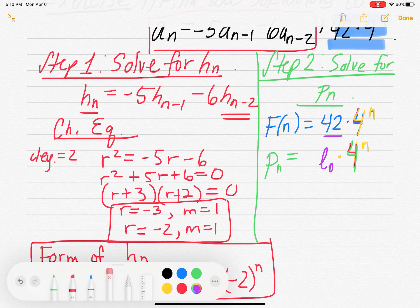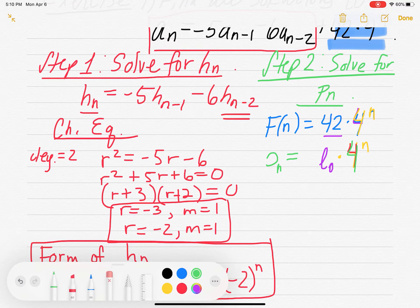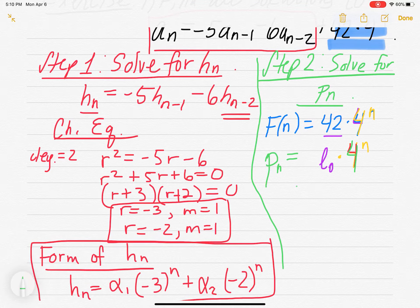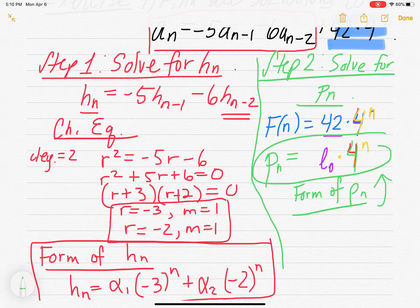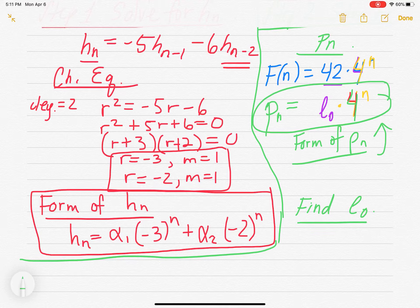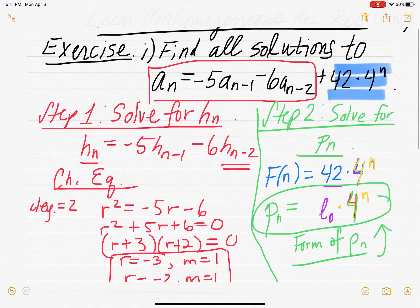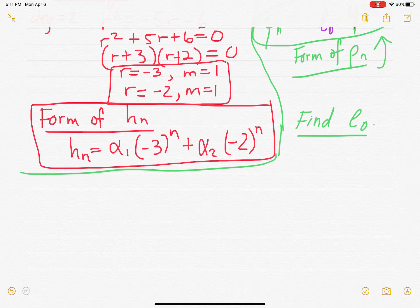So PN takes on the form E₀ times 4 to the N. That is the form of the particular solution. Now we want to find E₀ — this is the most difficult part. Well, if you go back to the recurrence relation, AN = −5·A(N−1) − 6·A(N−2) + 42·4ⁿ, PN should satisfy that. So instead of plugging in AN, let's plug in PN.